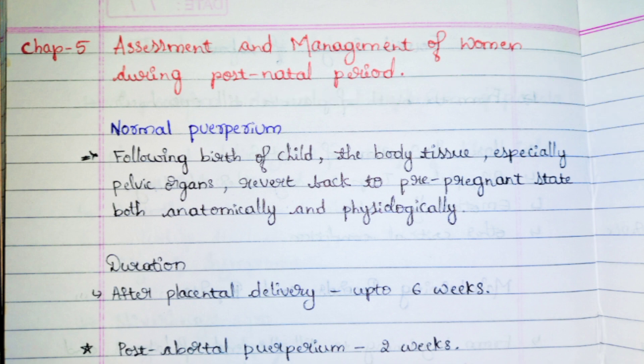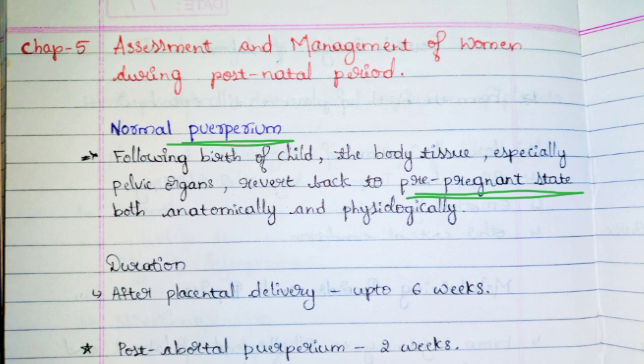The very first topic is puerperium, or normal puerperium. During the delivery process, a woman's body will be fully changed — the abdomen will be enlarged, the breast will be increased, even the mood will have lots of swinging, and there are hormonal changes, psychological changes. All those changes during pregnancy will get back to normal after the delivery. The women's body comes back to the normal pre-pregnant stage, and that process is known as puerperium. This takes place around six weeks — it's a slow process.